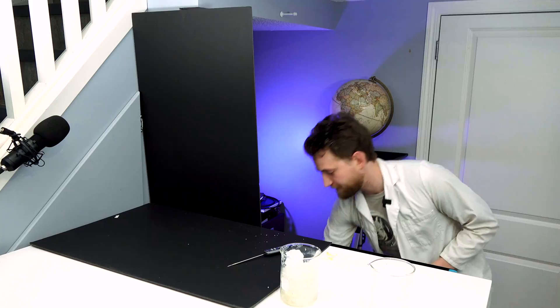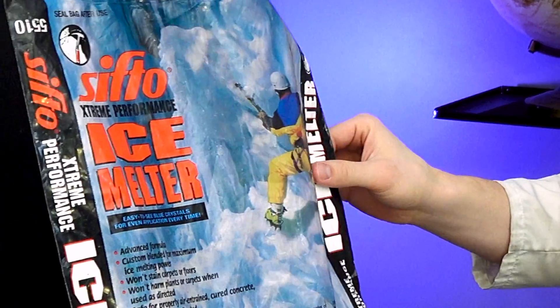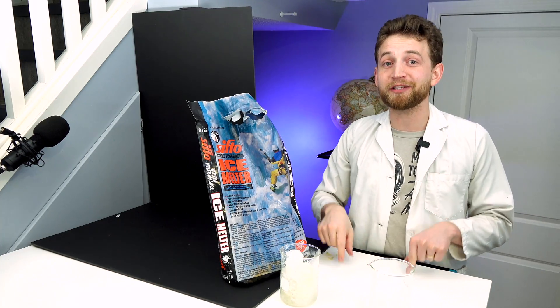Now, not just sodium chloride. This is our heavy-duty Canadian ice melt. And this is a mixture of sodium chloride, calcium chloride, and potassium chloride. And each of those has a different effect and lowers the freezing temperature of water even lower.